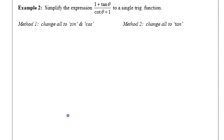We're going to look at example two here, where we're simplifying this expression: one plus tangent over cotangent plus one. There are a few different methods we're going to use here. One is we're going to try changing everything to sine and cosine, and then see what we can do with that.